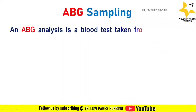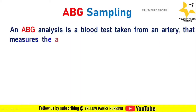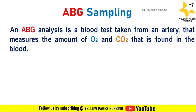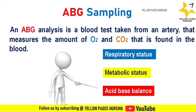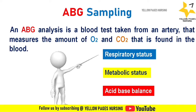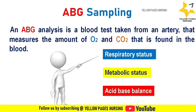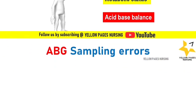An ABG analysis is a blood test taken from an artery that measures the amount of oxygen and carbon dioxide found in the blood. An ABG is done to evaluate respiratory status, metabolic status, and acid-base balance. Inappropriate collection and handling of arterial blood specimens can produce incorrect results and may sometimes lead to misdiagnosis.